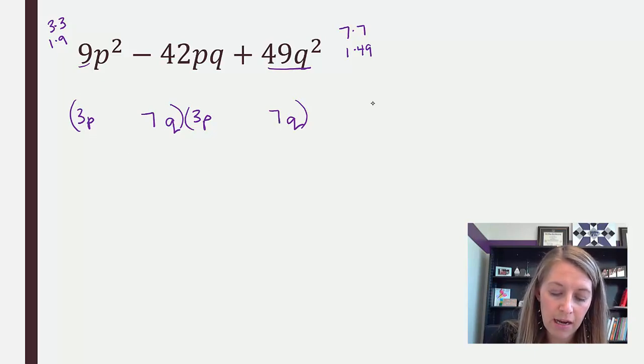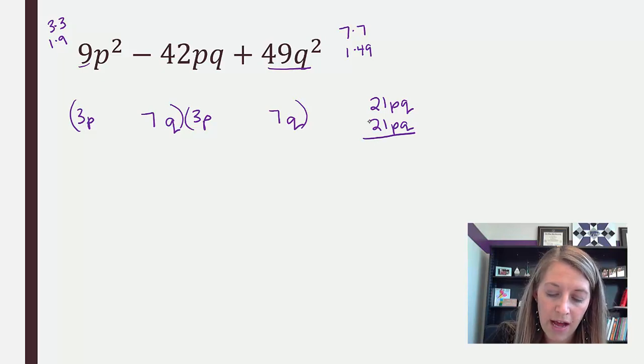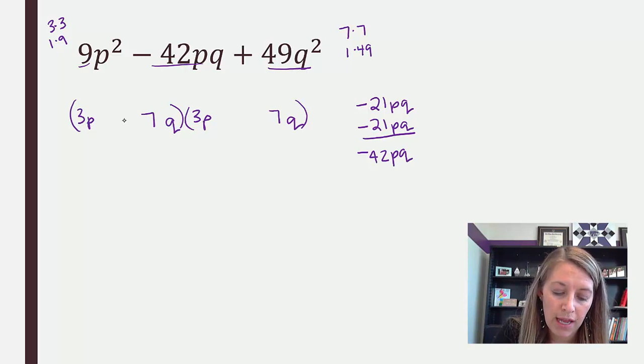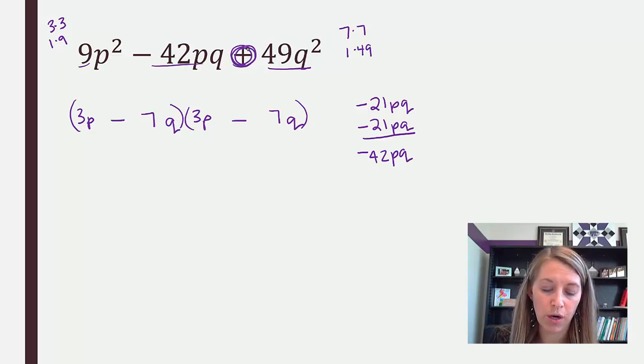If I do outside, that gives me a 21PQ. Inside gives me a 21PQ. And if I do both of these are negative, that gives me a negative 42PQ, which is exactly what we're looking for in the middle. So I need to do a negative and a negative. And if I double check my last sign, negative seven Q times negative seven Q does give me a positive 49Q squared.